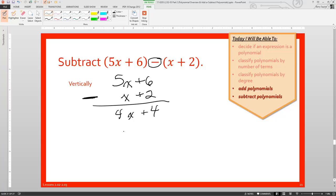But sometimes it just might be easier to change this subtraction into addition, and then change all the signs of that second expression. So to see what that kind of looks like, we would take our 5x plus 6, and then we would add, because we're changing it to addition, negative x minus 2, and now we're going to add 6 plus negative 2 is 4, and 5x plus negative x is 4x.